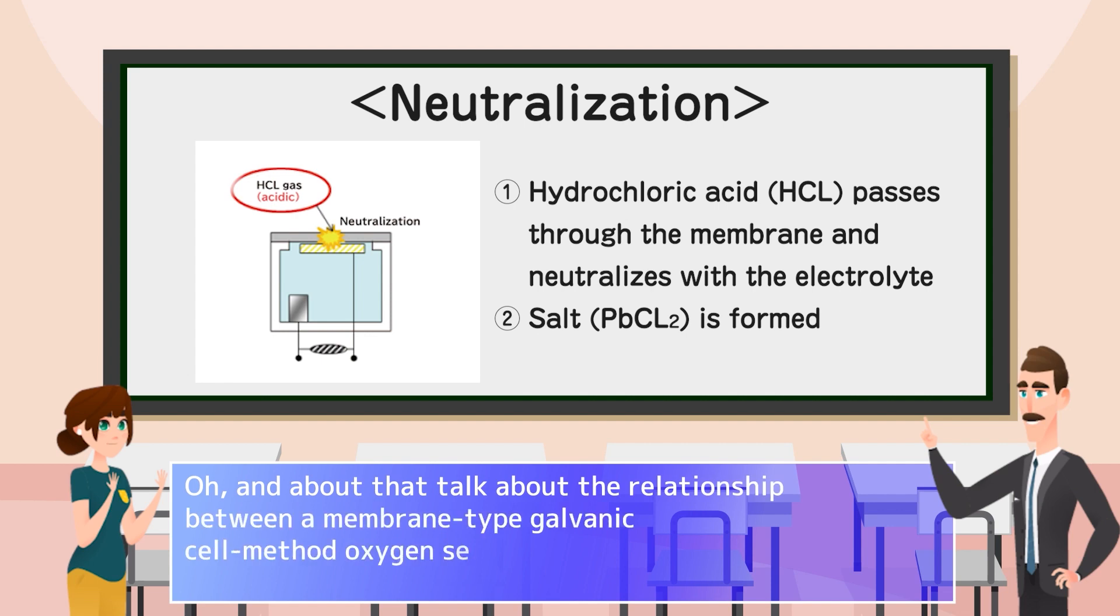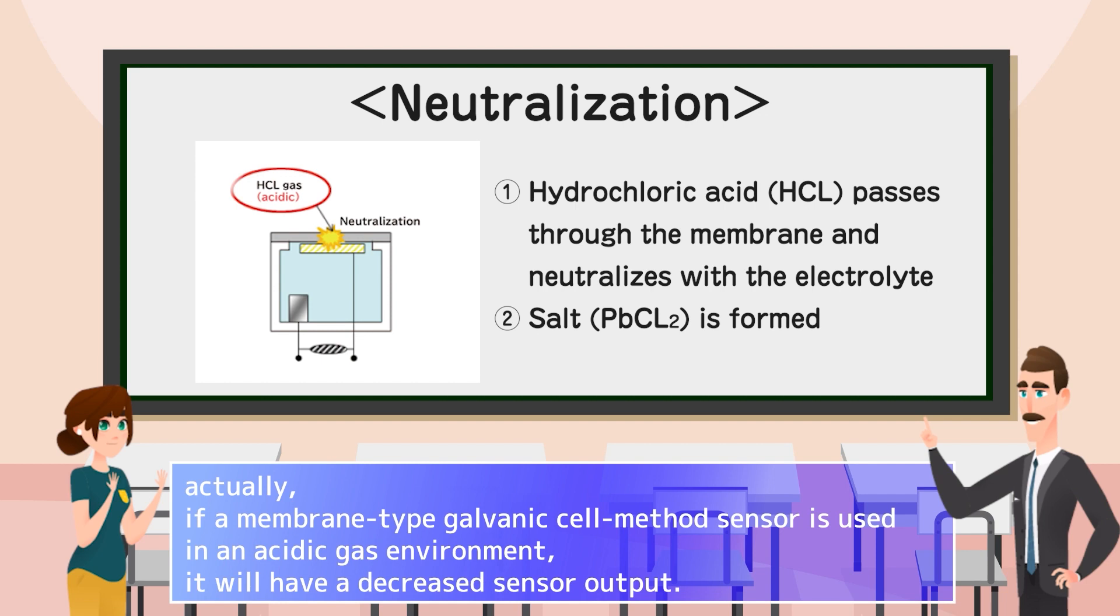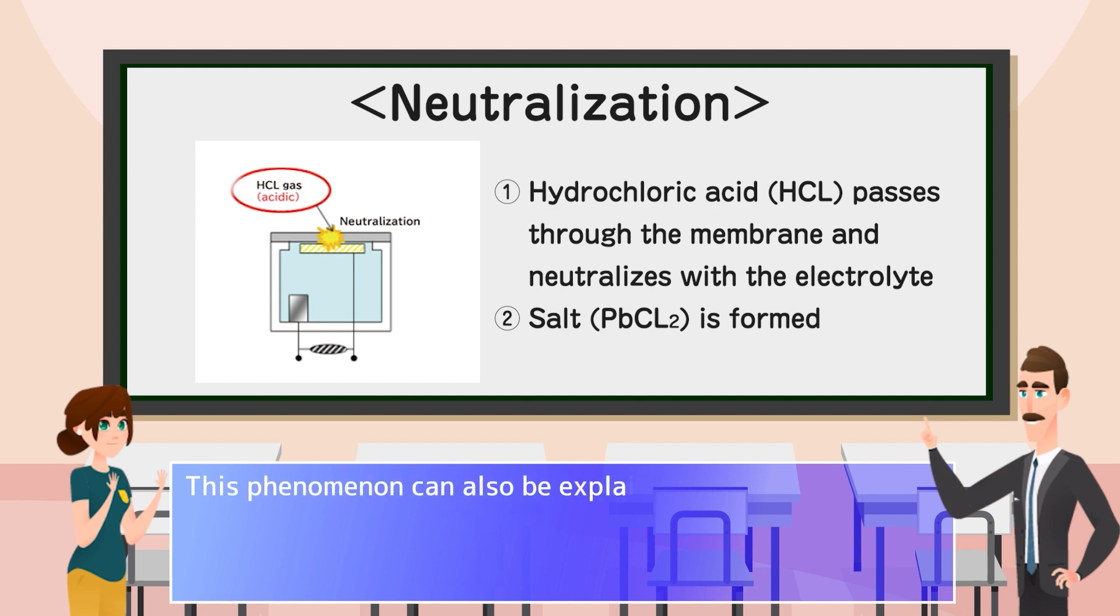Oh, and about that talk about the relationship between a membrane-type galvanic cell method oxygen sensor and acidic gas you said you heard recently. Actually, if a membrane-type galvanic cell method sensor is used in an acidic gas environment, it will have a decreased sensor output. This phenomenon can also be explained through neutralization.